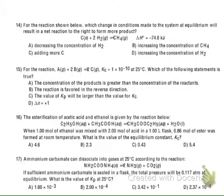Chapter 15, question number 14. This is a conceptual question. For the chemical reaction shown below, which change in conditions made to the system at chemical equilibrium will result in a net direction to the right to form more product?